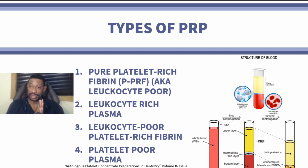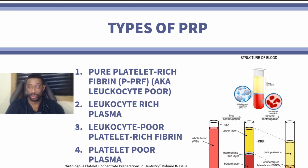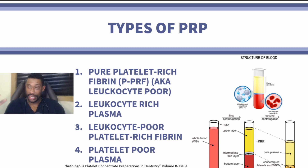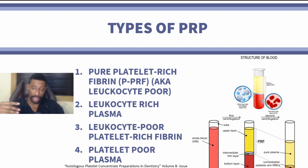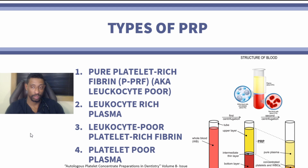When we look at a further breakdown, we can see there is both leukocyte-rich plasma and leukocyte-poor plasma, and different compositions of having fibrin or not having fibrin, in addition to having poor platelets. Those are the four different types of PRP that can be utilized.